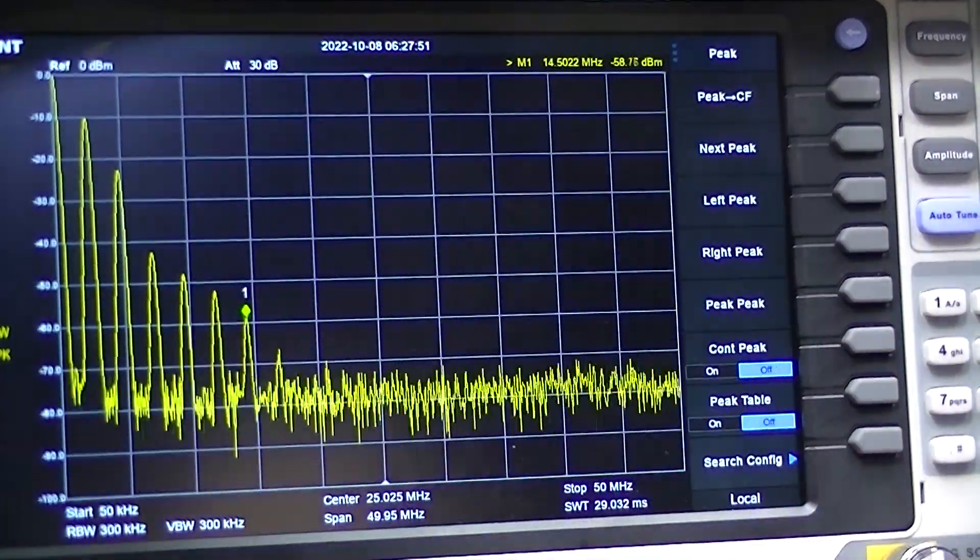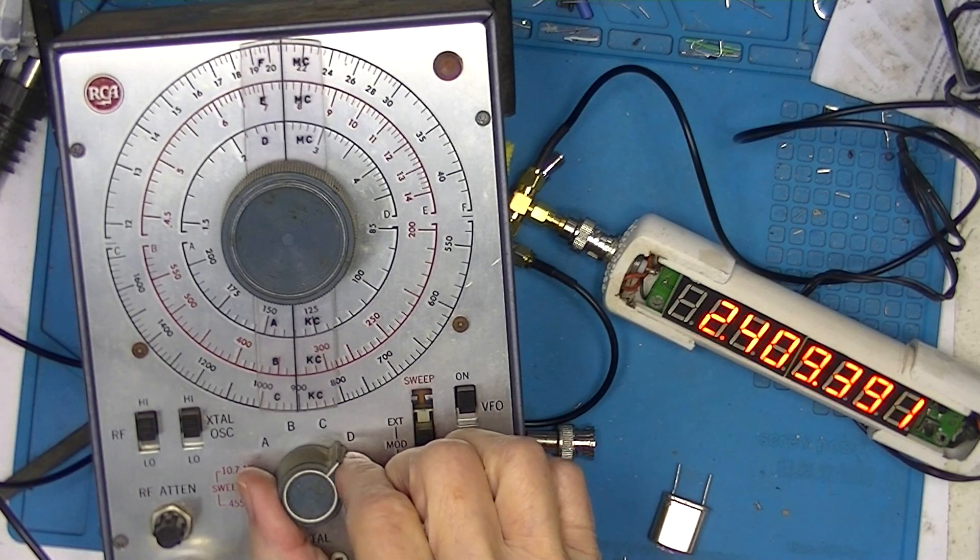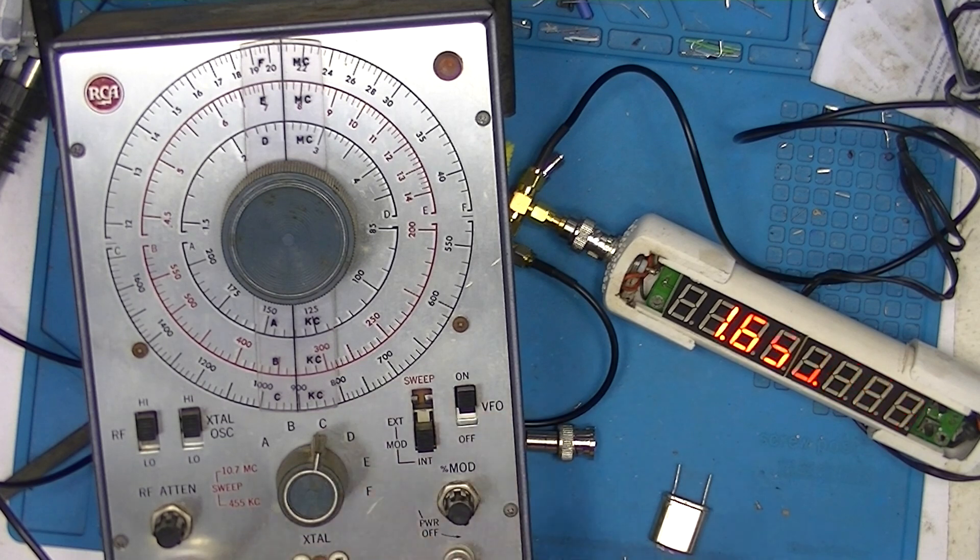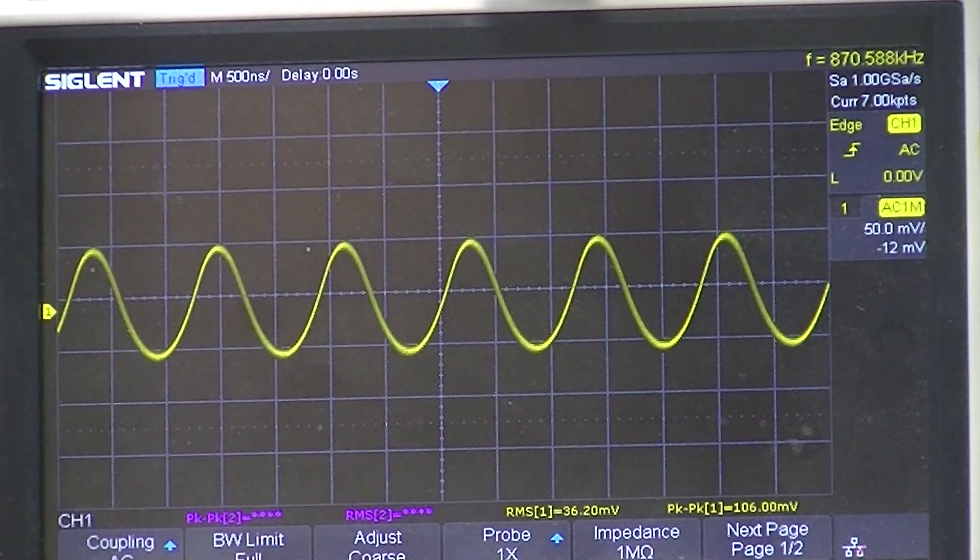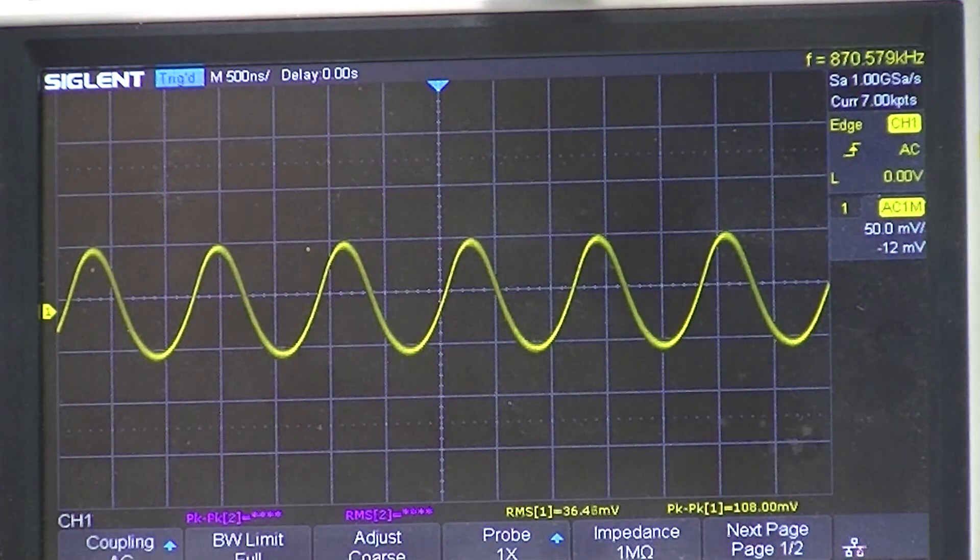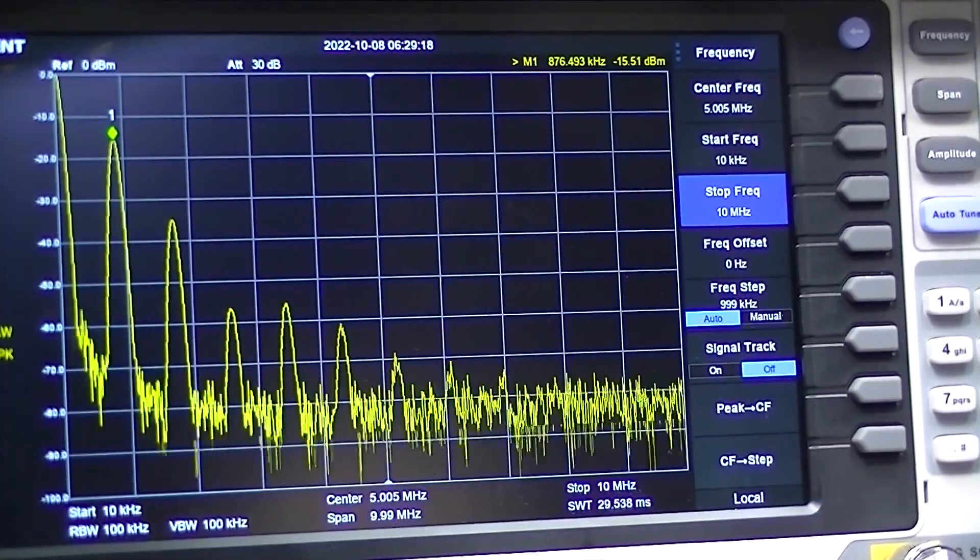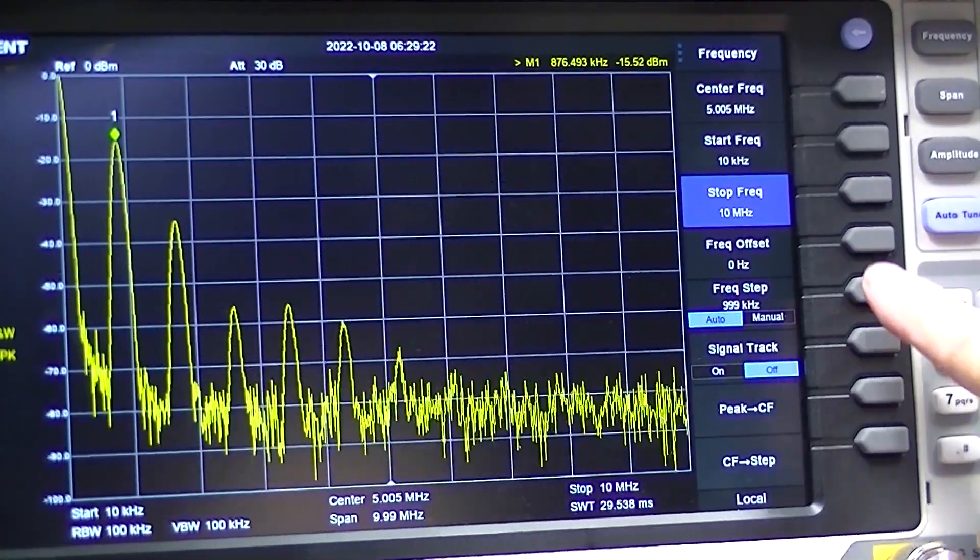Go down to C which should put us at nine hundred kilohertz. You can see we've lost some amplitude on the signal generator and it says eight hundred seventy kilohertz. That's the fundamental at one. And we'll go right up the line, second harmonic, third harmonic and so on.